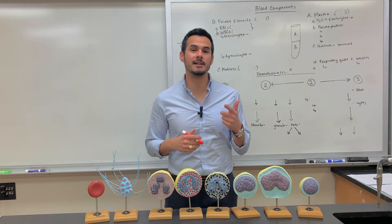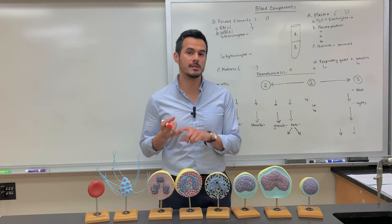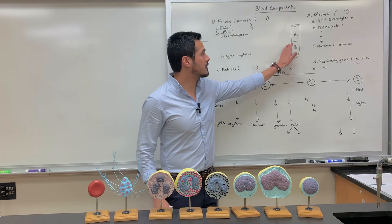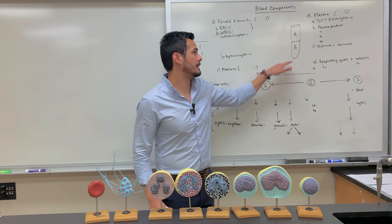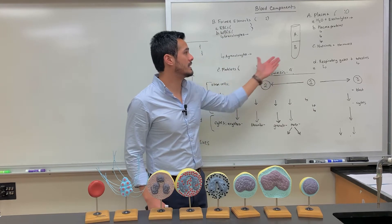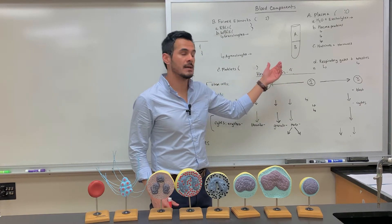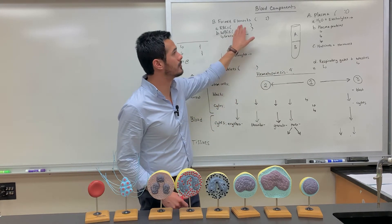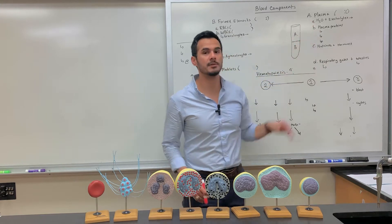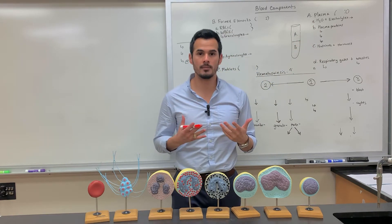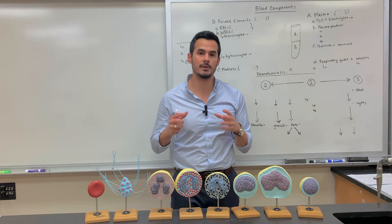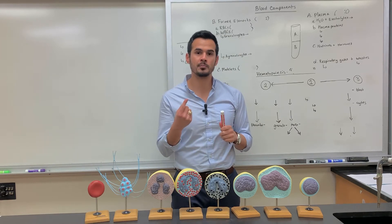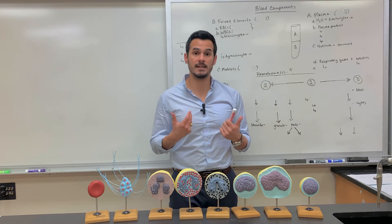In this lecture I'm going to go over the different components of blood as well as hematopoiesis. What I have drawn here on the board represents a test tube containing blood. In order to separate blood into its two main components — the formed elements and the plasma — the blood is drawn from the patient and put into a centrifuge, which spins the blood and separates it based on density.